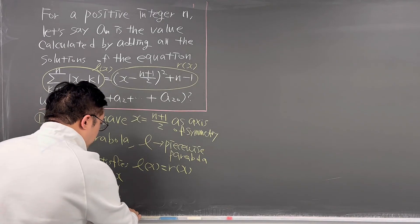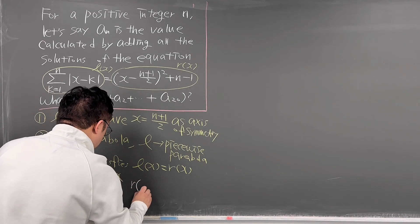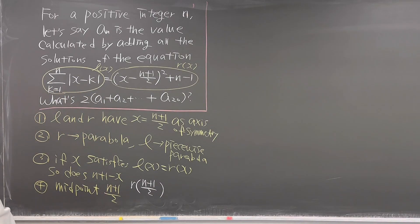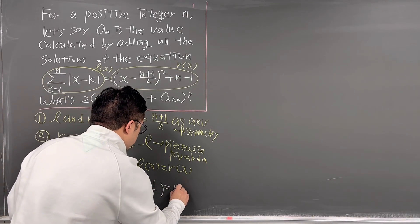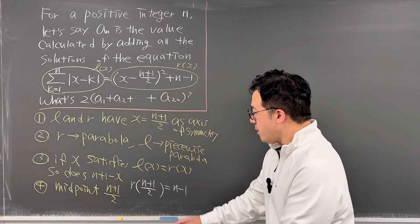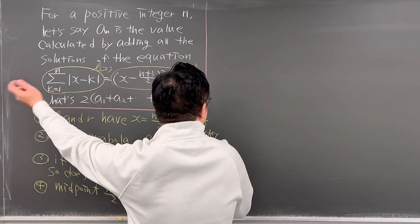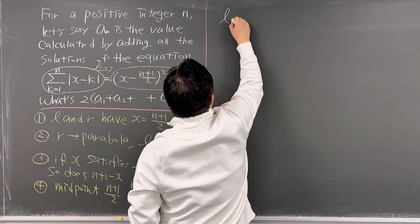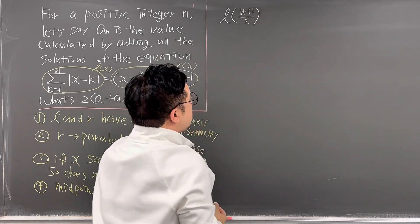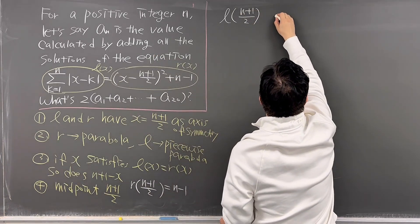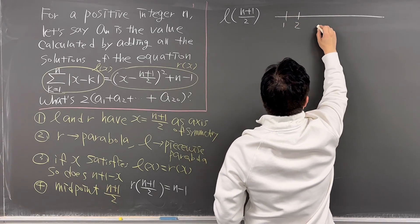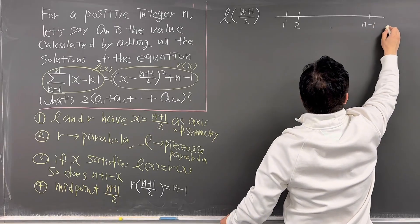We can easily compute R((n+1)/2), which is just going to be n - 1. Now let's think about L((n+1)/2). We can draw the number line from 1, 2, all the way up to n-1 and n.